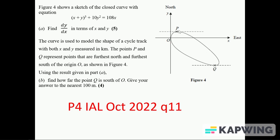We're going to find dy/dx of x and y, and then it wants us to find out where Q is. P and Q represent the furthest north and furthest south, and we're going to find out how far Q is south of O.